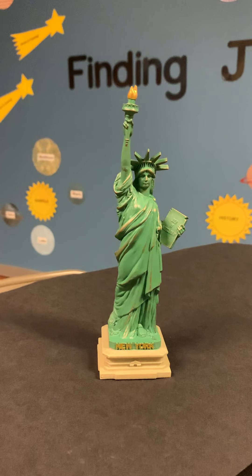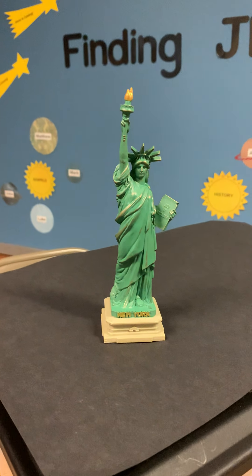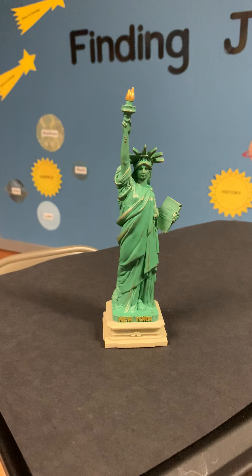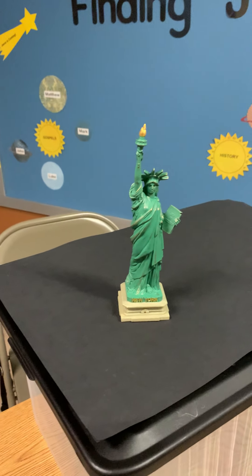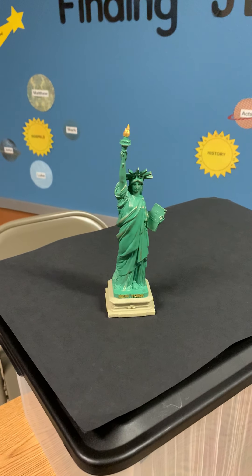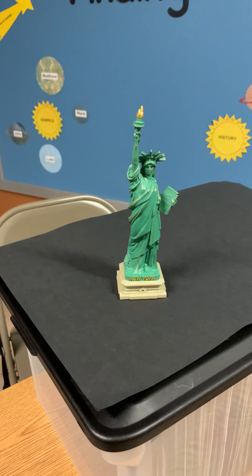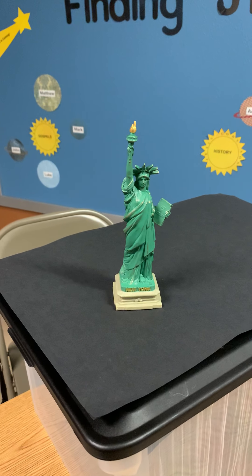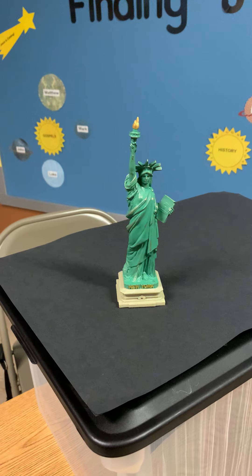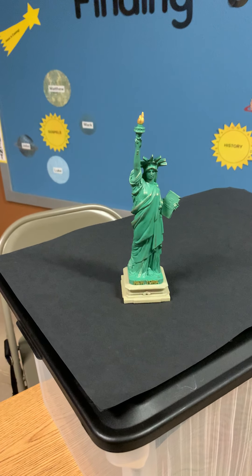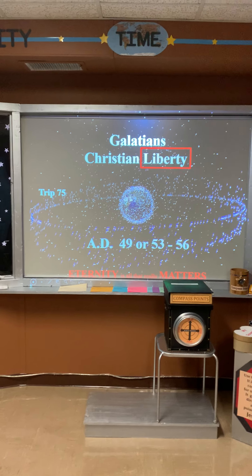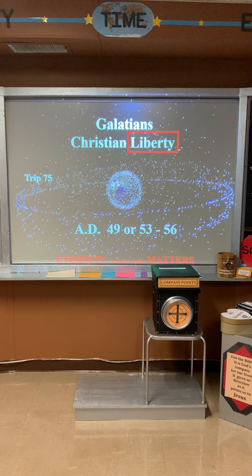In her right hand she holds a torch, and in her left hand she carries a tablet inscribed in Roman numerals with July the 4th, 1776 — the date of the U.S. Declaration of Independence. The Declaration of Independence was a statement adopted by the Continental Congress on July 4th, 1776. It announced that the 13 American colonies would become 13 independent states, no longer under the British Empire — called the United States of America. The Declaration of Independence was the beginning of our free and liberated country. The book of Galatians has been called the Christian's Declaration of Independence, and on our trip today we're going to discover why.